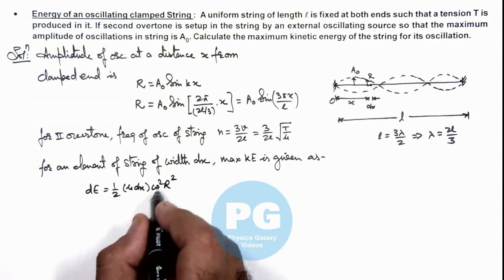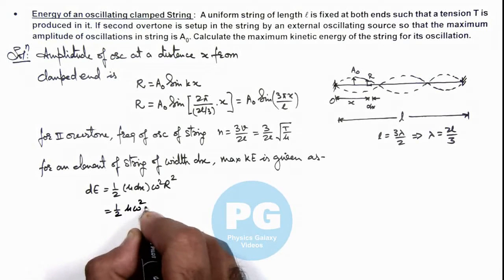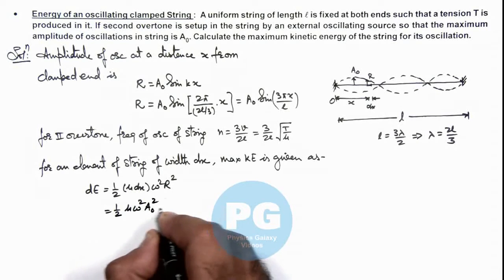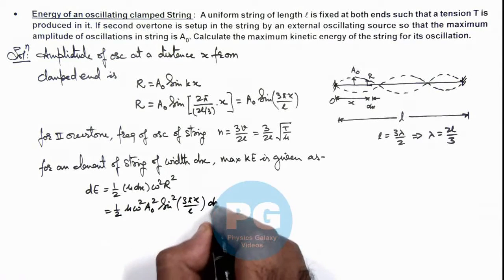So on substituting the value of R, this will give us ½ μω² A₀² sin²(3πx/l) multiplied by dx.